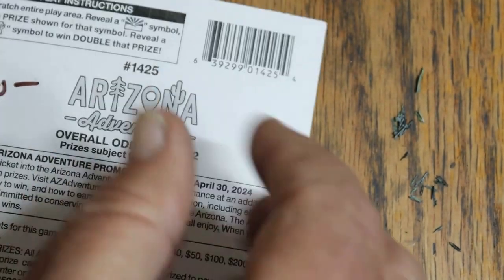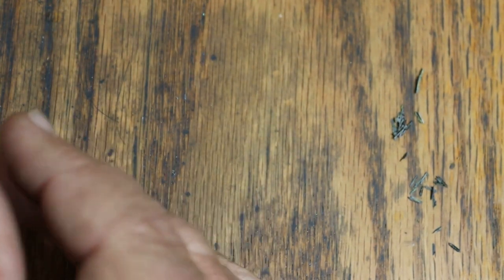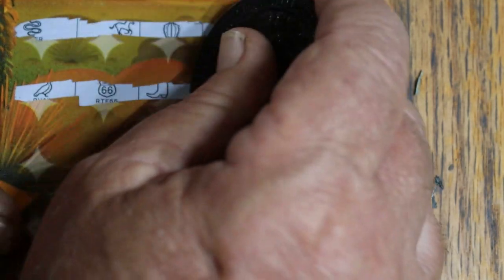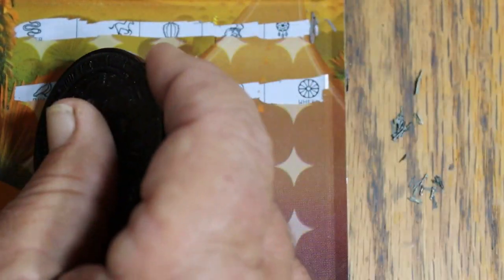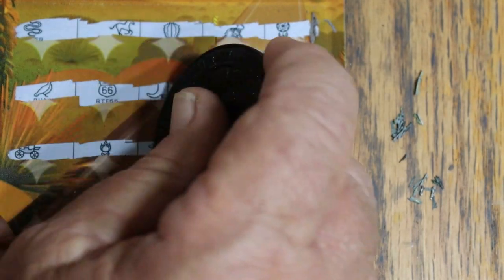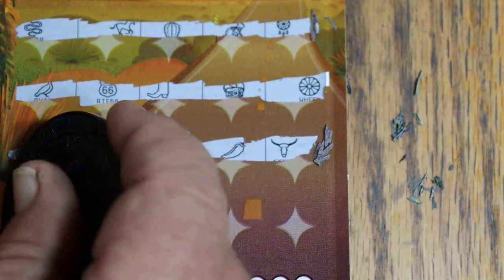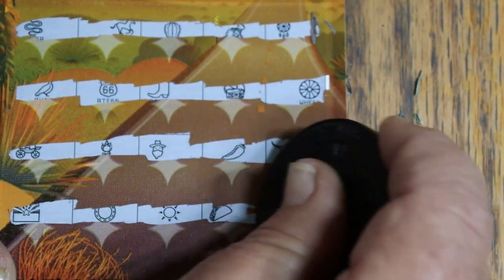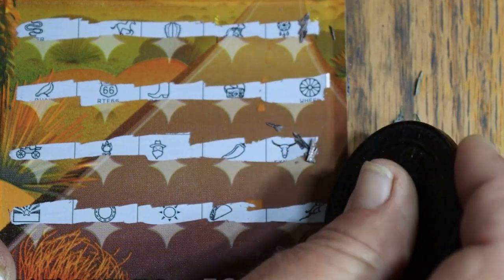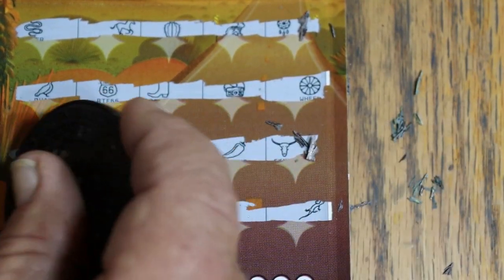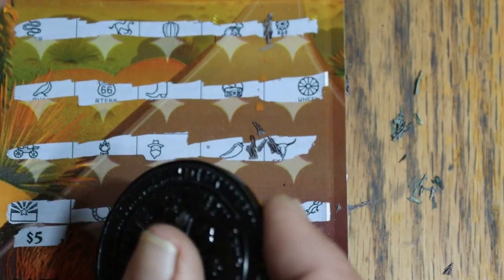So we're starting off with a ten. No need to circle anything. Just get with it. So we got ten on the board. Nothing on that row. Nothing there. Nothing in that row. Has to be in this row. There's a flag. And we got five there.